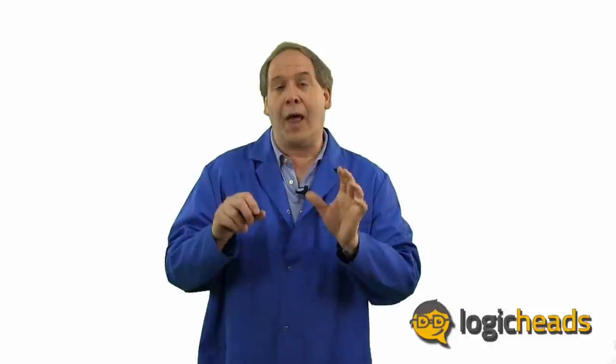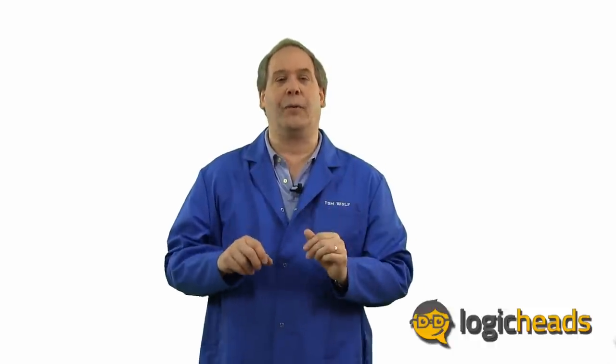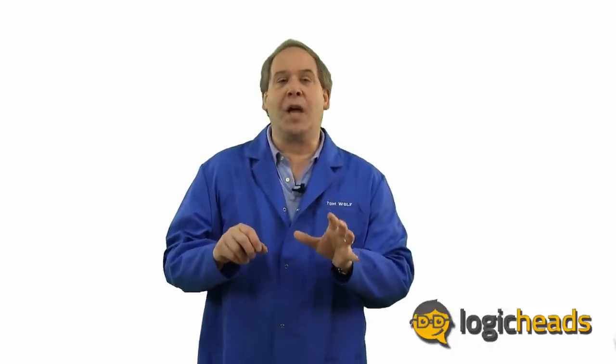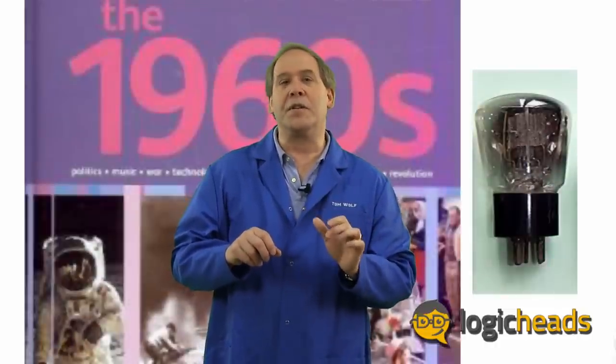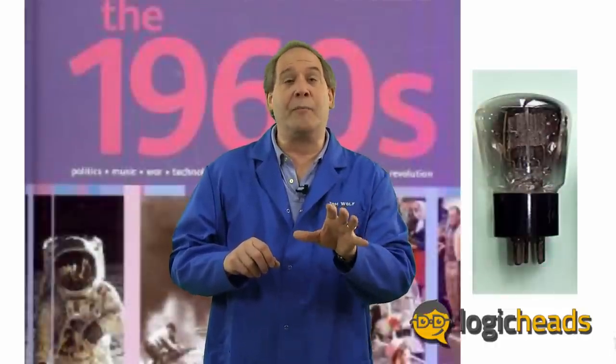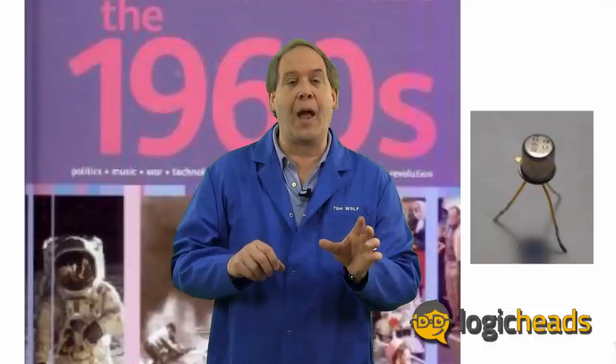But this is an engineering class, so we're going to start logic when it got its electrical form. Imagine ourselves in the middle of the 1960s. The vacuum tube has been the king of electronics since the turn of the century. Its diminutive brother, the transistor, has only been around for about a decade.